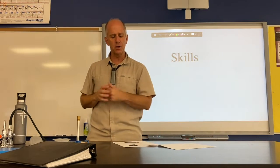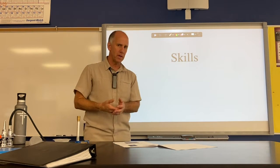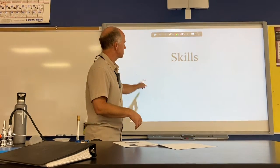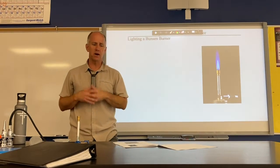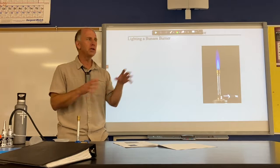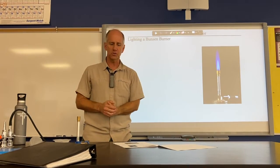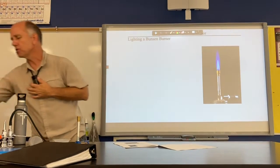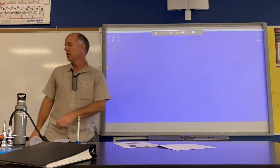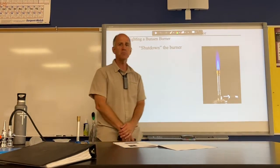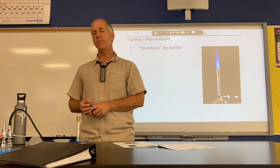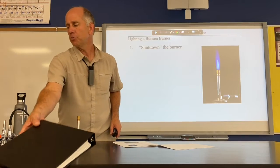There is some lab equipment that you need to be able to skillfully use. The first one is a Bunsen burner. On the screen you can see what a properly lit Bunsen burner looks like. In order to properly light a Bunsen burner, the steps go like this. The first thing you're going to do is shut the Bunsen burner down — I'll show you more about what that means in a minute.